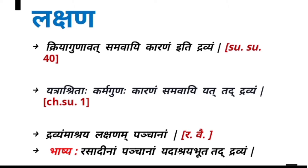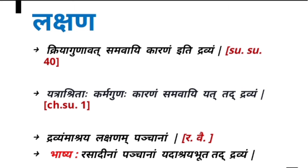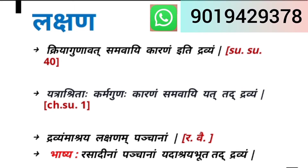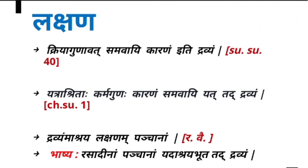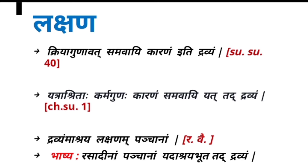Charaka in Sutrasthana first chapter also mentions the same: 'Yadra Shritaha Karma Gunaha Karanam Samavai Yadda Dravyam' — where Karma and Guna take Ashraya with an inseparable Samavai relationship, that is nothing but the Dravya. The Vaisheshika perspective from Badanta Nagarjuna states: 'Dravyam Ashraya Lakshanam Pancha Anam' — Dravya has five Ashrita entities in it.